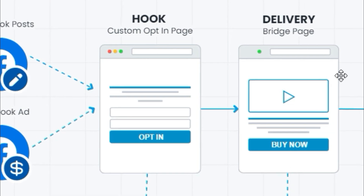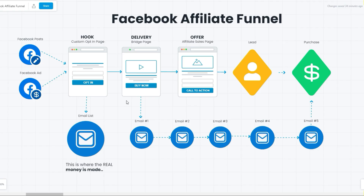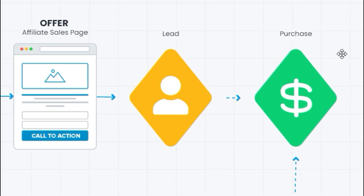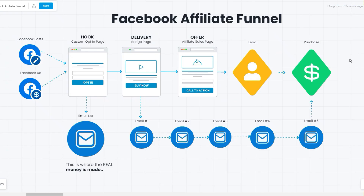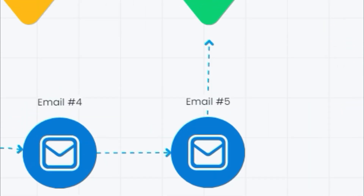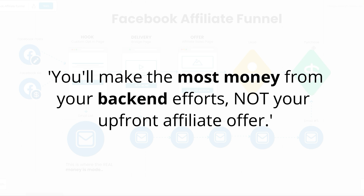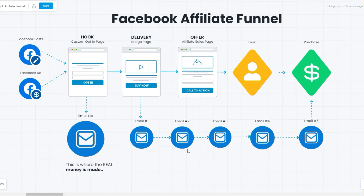From your hook, we move on to the bridge page, where we deliver the promise from our hook — this could be an ebook, a video, a discount code, anything you promised on your hook. From the bridge page, after delivering our promise, we send targeted visitors to our affiliate sales page, where they truly see what the offer is about. At this point, your visitor either purchases your affiliate offer or stays as a lead. The vast majority will stay as leads, and your whole strategy is to follow up with an email sequence that will eventually lead to a sale. So the most money with your affiliate campaign on Facebook will come not from the front end, but from your email follow-up sequences.